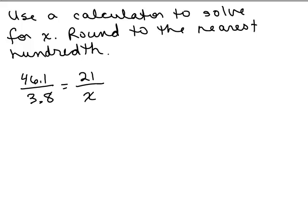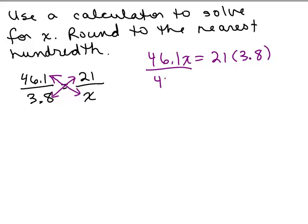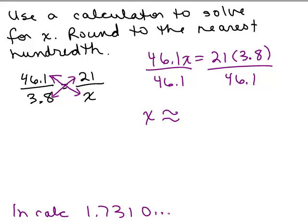All right, so we're looking for X here, and it's across diagonally from 46.1. So 46.1X equals 21 times the 3.8, right, because those are the other two numbers. And then we'll divide by 46.1. So in our calculator, we want to put in 21 times 3.8, and then divide by 46.1. In the calculator, I get 1.7310, et cetera, so again, I'm going to just keep it at 1.73. I'm not going to round up. So this is approximately 1.73.